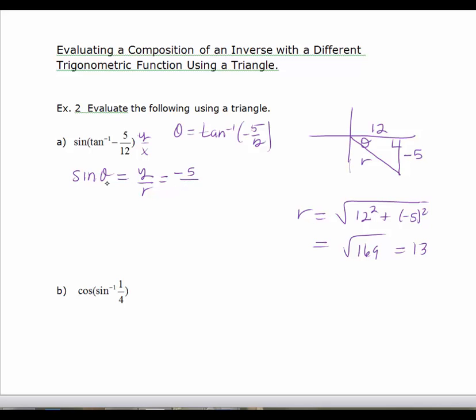So the answer sine of theta is going to be negative 5 thirteenths. Or we just say the sine of the inverse tan of negative 5 twelfths is negative 5 thirteenths. So the angle whose tangent is negative 5 over 12 has a sine of negative 5 over 13.